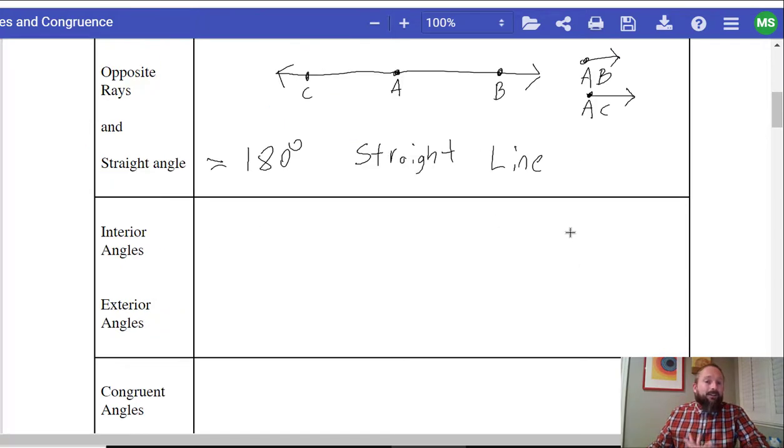So interior angles, we don't really talk about these as much. But if we have something like this, we would say if we're talking about angle ABC, normally we'd be talking about the angle formed inside. Inside equals interior.